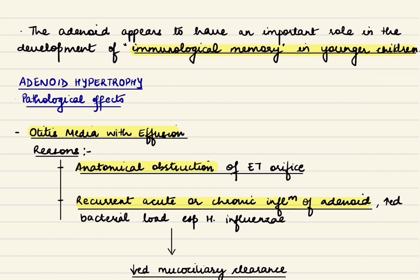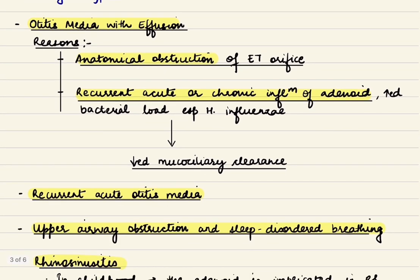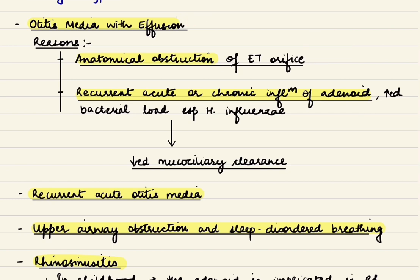The pathological effects of adenoid hypertrophy are mainly on the ear and nose. Ear manifestations include otitis media with effusion, due to anatomical obstruction of the eustachian tube orifice, and also due to recurrent acute or chronic inflammation of the adenoid, which increases bacterial load especially of H. influenzae, leading to decreased mucociliary clearance.